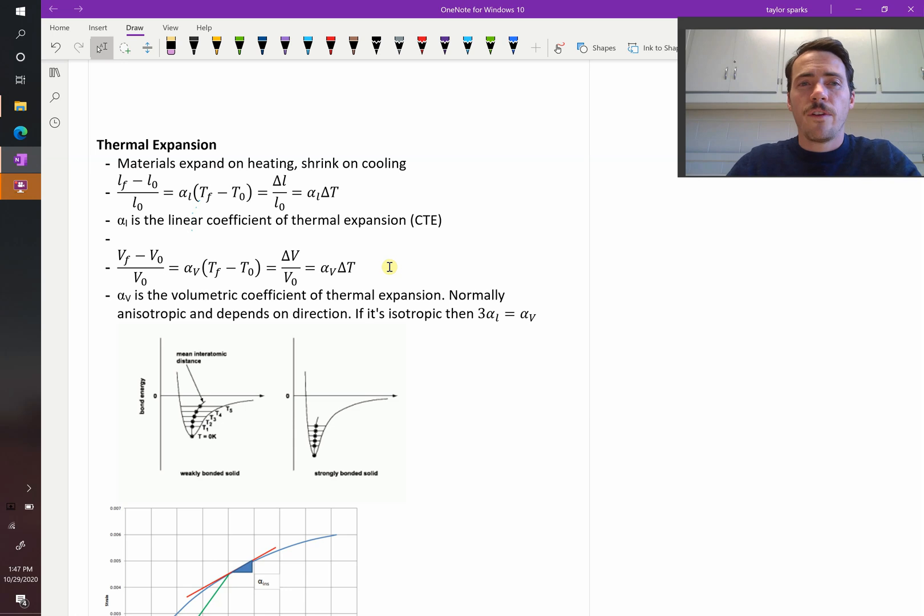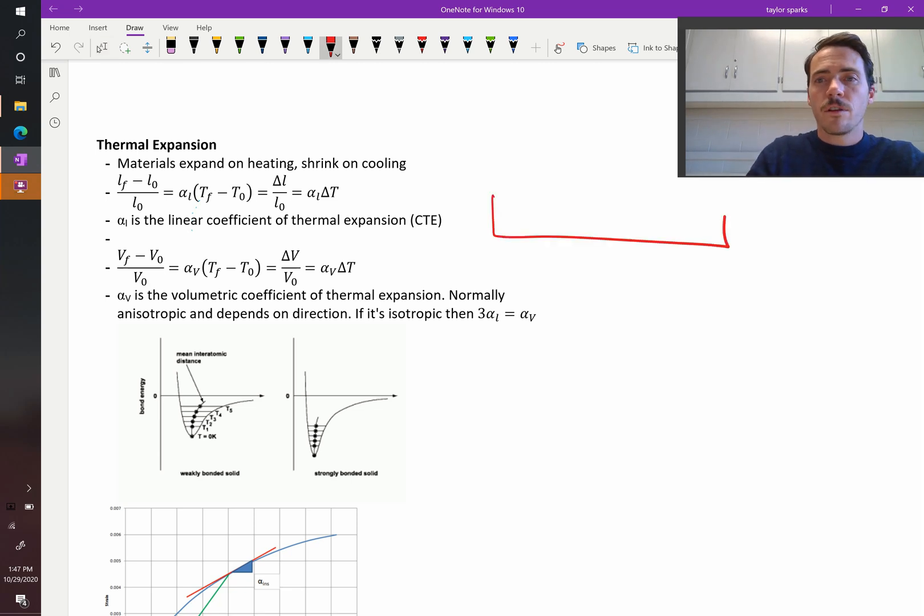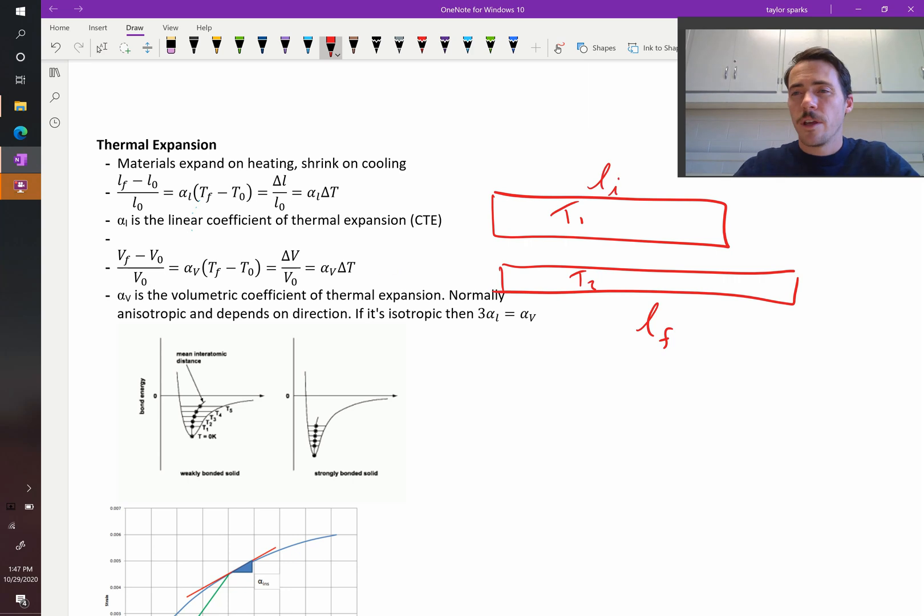So we can quantify this. We can do it in a couple different ways. We can do it in a linear fashion or a volumetric fashion. Let's think about linear first. In a linear fashion, we're just going to consider the length of a sample. This is it at temperature 1. You heat it up, and now it's at temperature 2, and it's expanded. So this is L final, and this was L initial. Some initial length, some final length.